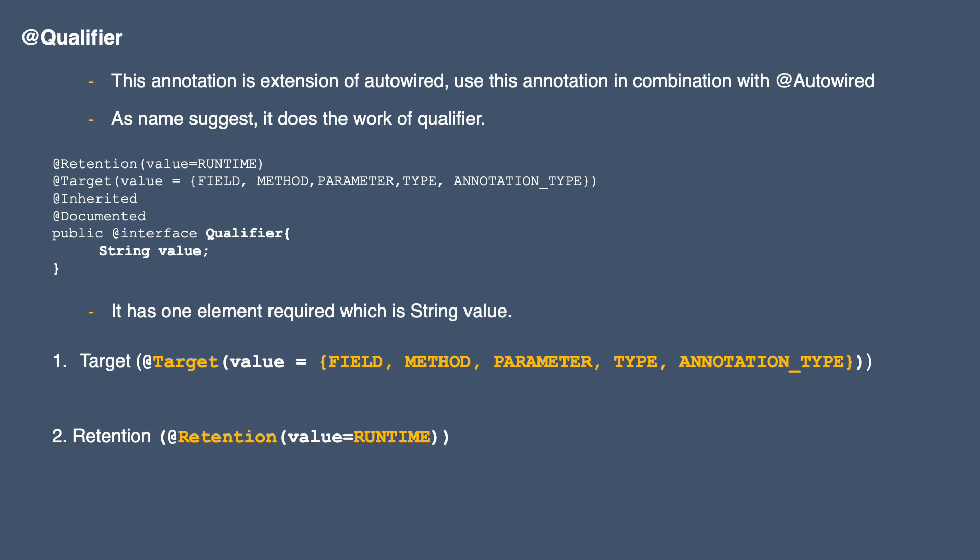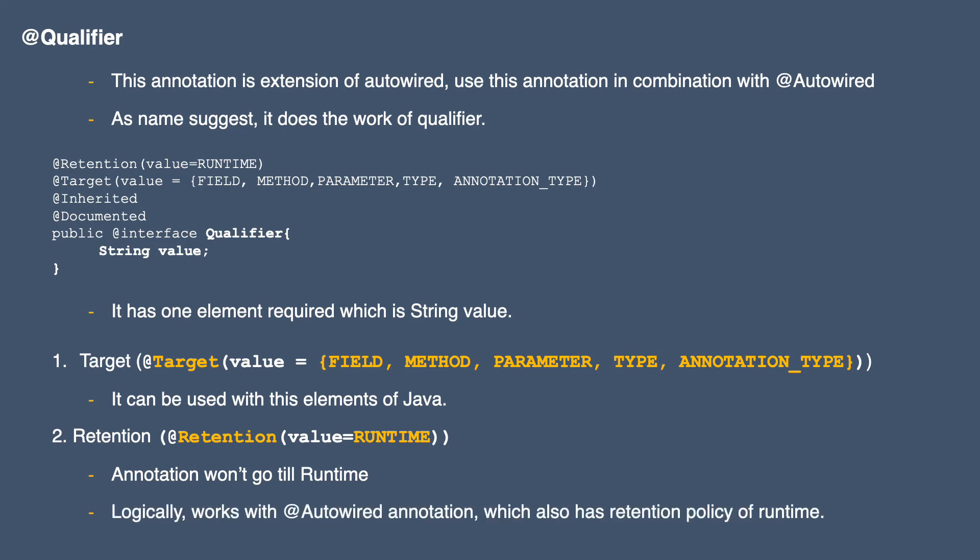For this annotation, the target is field, method, parameter, and annotation type — so you can use this annotation with these elements of Java. The retention policy for this annotation is runtime, meaning this annotation will persist till runtime. This makes sense because this annotation works in combination with Autowire, which also has a retention policy of runtime, since dependency injection takes place at runtime.